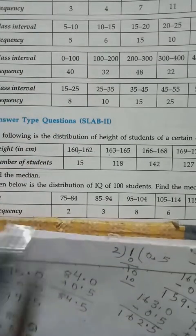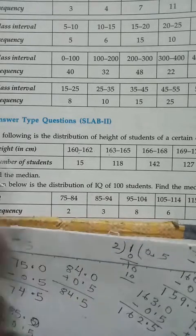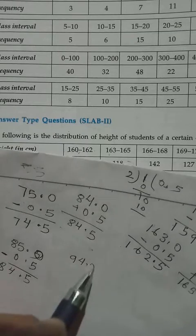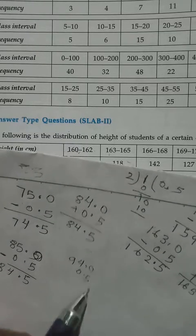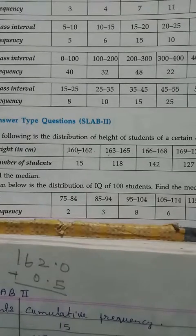That mean, the upper limit of the first class will be the lower limit of the second class. Then 94.0 plus 0.5. 94 remains same, only 5 increase.